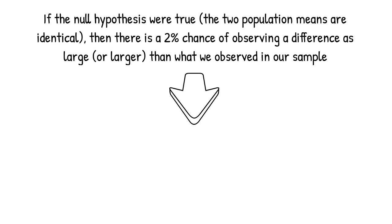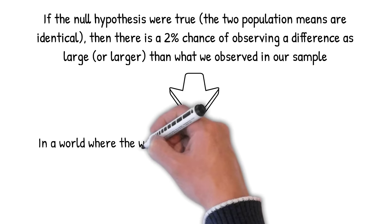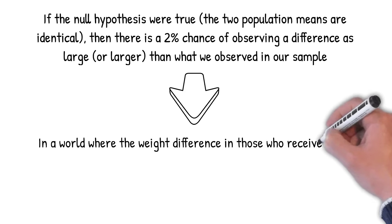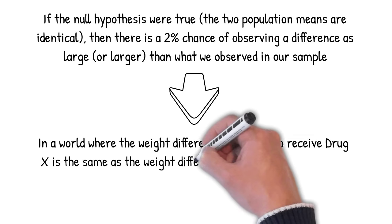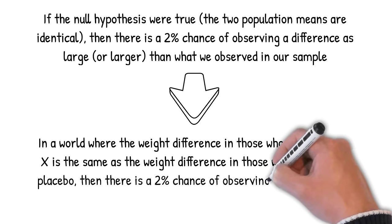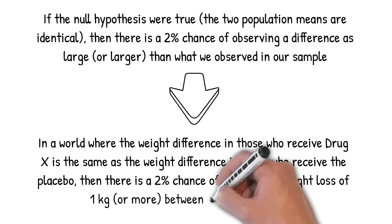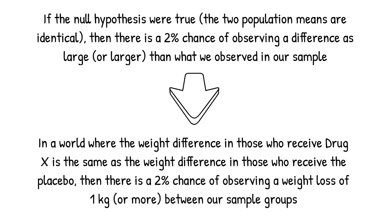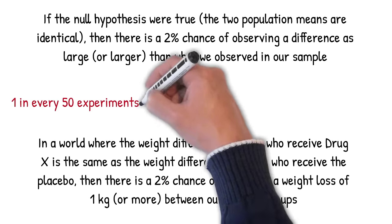In our example, this would translate to, in a world where the weight difference in those who receive drug X is the same as the weight difference in those who receive the placebo, then there is a 2% chance of observing a weight loss of 1 kilogram or more between our sample groups. To put that into perspective, a 2% chance is 1 in every 50 experiments.